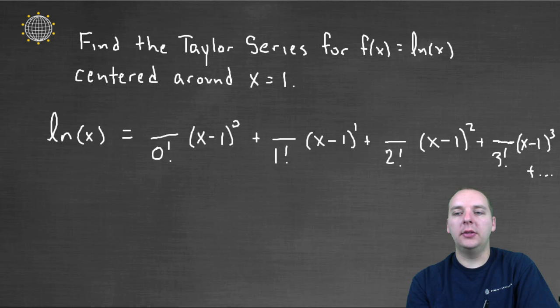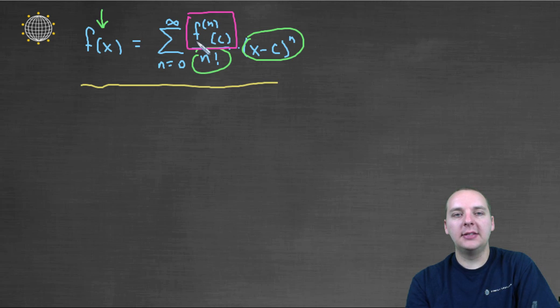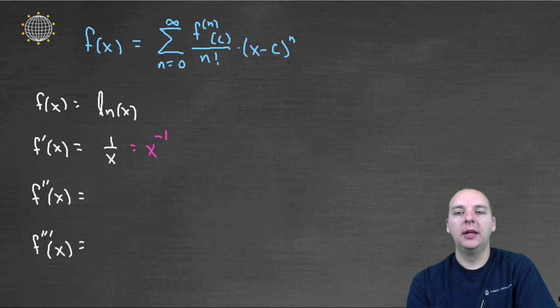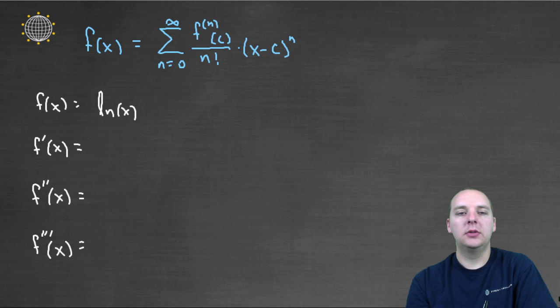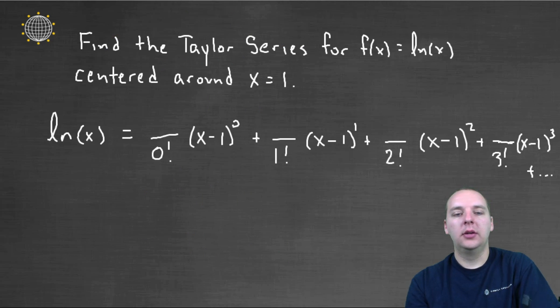And then what are these numerators? These numerators are the nth derivative evaluated at one. That was these guys who went zero, one, negative one, two. So let's write that down. We'd have zero, one, negative one, two, and then some additional terms too.